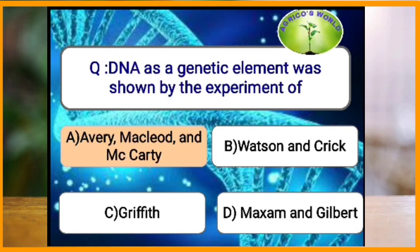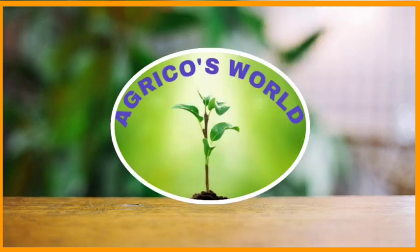DNA as a genetic material was shown by which experiment? The first evidence that DNA is a genetic material was shown by Avery, MacLeod, and McCarty when working on Diplococcus pneumonia. The antibiotic that causes premature chain termination in both prokaryotes and eukaryotes is puromycin.